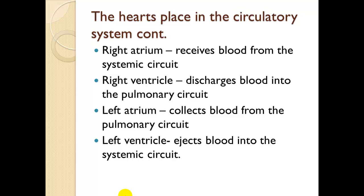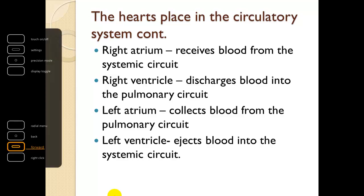The right atrium receives blood from the systemic circuit — every time we hear systemic, we should think body. The right ventricle discharges blood into the pulmonary circuit; its job is to load the lungs so that the blood can get oxygenated. The left atrium collects blood from the pulmonary circuit after it's been oxygenated, and the left ventricle ejects blood into the systemic circuit.